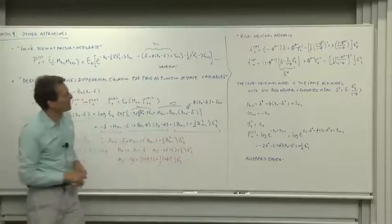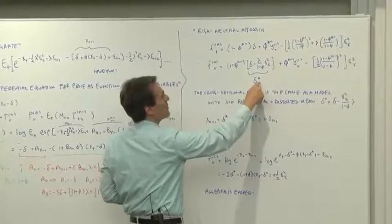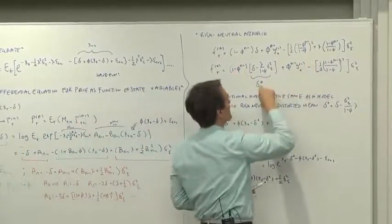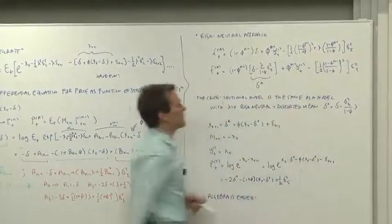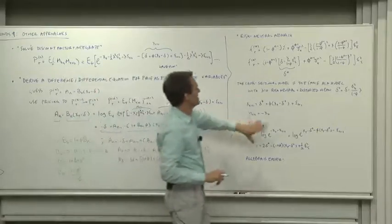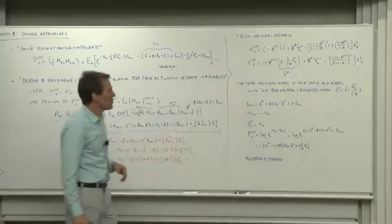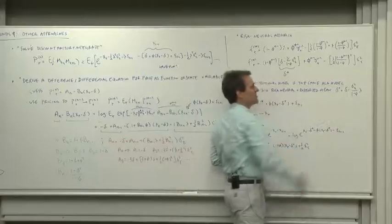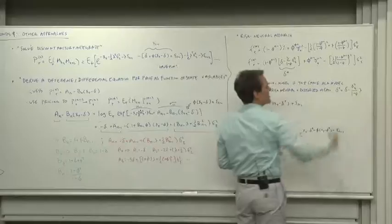But now look at what we've got. If we just called this thing delta star, we would have exactly the same formula but with a different mean, delta, and no risk premium. So the cross-sectional model here is the same as a model with no risk premium, lambda equals zero, a risk-neutral model but a distorted mean, a mean delta star which is delta minus. We fold the risk premium into the mean.